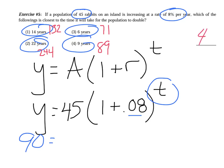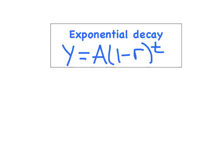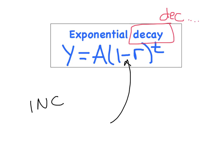We've talked about exponential growth — something increasing. We can also have exponential decay, meaning something is decreasing. The formula looks almost the same: y equals a times one minus r to the t. The key difference is the sign: increasing uses a plus sign, decreasing uses a minus sign. Slow down and highlight that key word — whether you're increasing or decreasing.